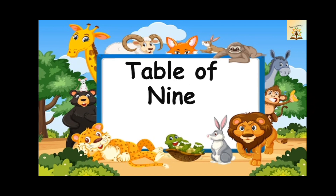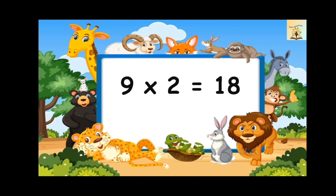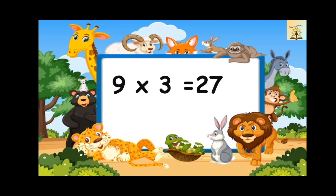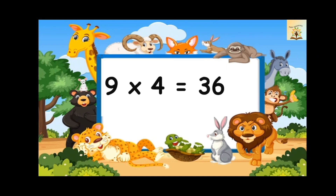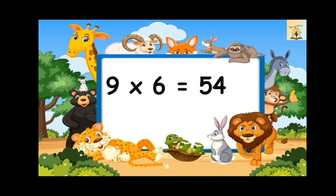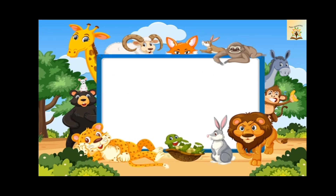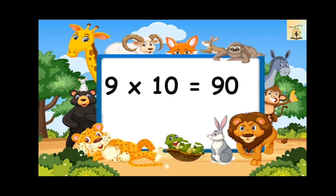Table of nine. Nine ones are nine. Nine twos are eighteen. Nine threes are twenty-seven. Nine fours are thirty-six. Nine fives are forty-five. Nine sixes are fifty-four. Nine sevens are sixty-three. Nine eights are seventy-two. Nine nines are eighty-one. Nine tens are ninety.